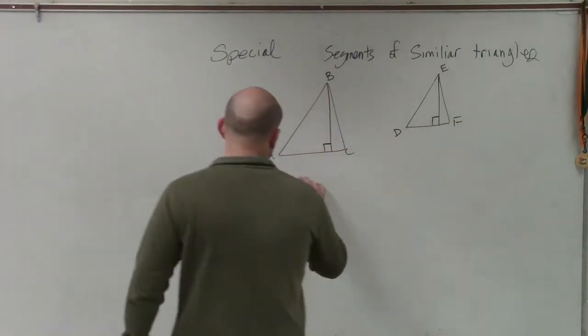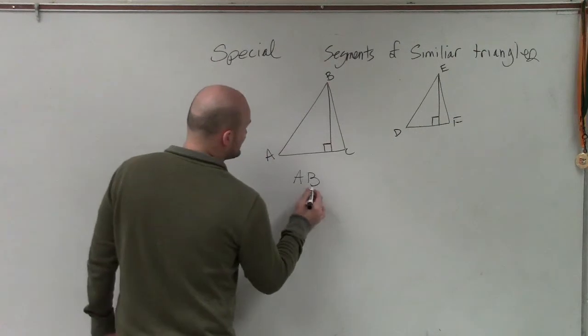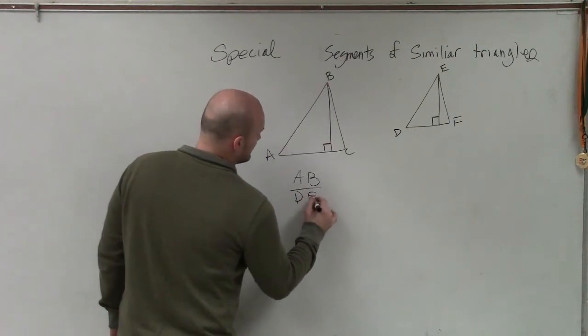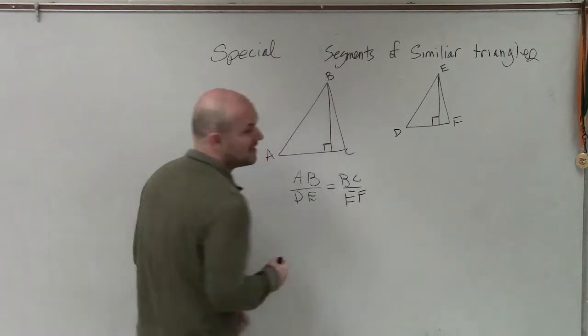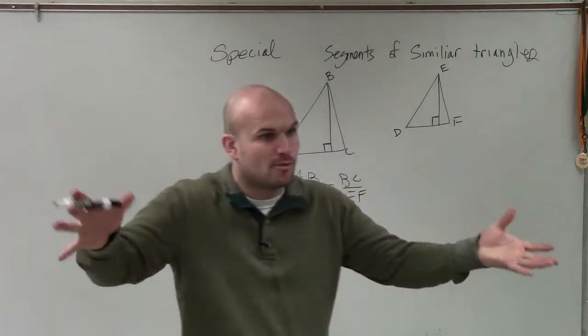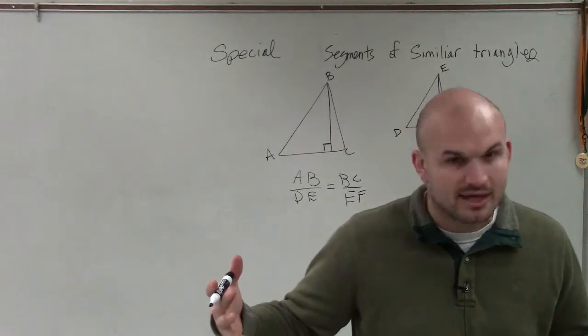We already know that AB is to DE, which is equal to BC, which is to EF. You guys understand that similar triangles, the sides are proportional to one another, right?